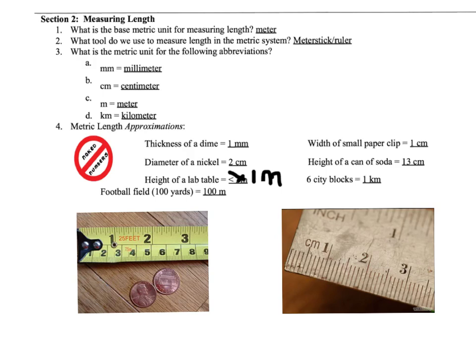Now approximations, we have these to give you guys an idea of what some common items are. The thickness of a dime if you tip it up on its edge is approximately one millimeter. Diameter of a nickel, going across, would be two centimeters. Height of a lab table is approximately one meter. And a football field is approximately 100 meters. A small paper clip is one centimeter, and six city blocks equals a kilometer.